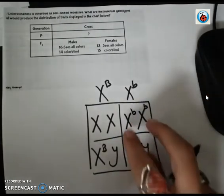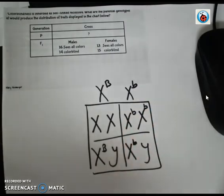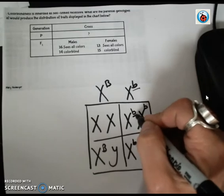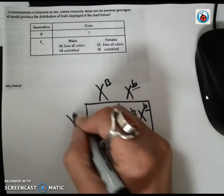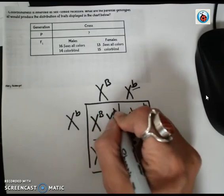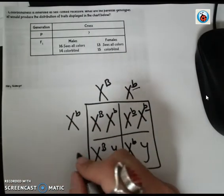For a female to be colorblind, she would have to have two copies of that recessive allele. So therefore, if she got one recessive allele from her mother, she'd have to get the other one from her father. So therefore, the father is also colorblind.